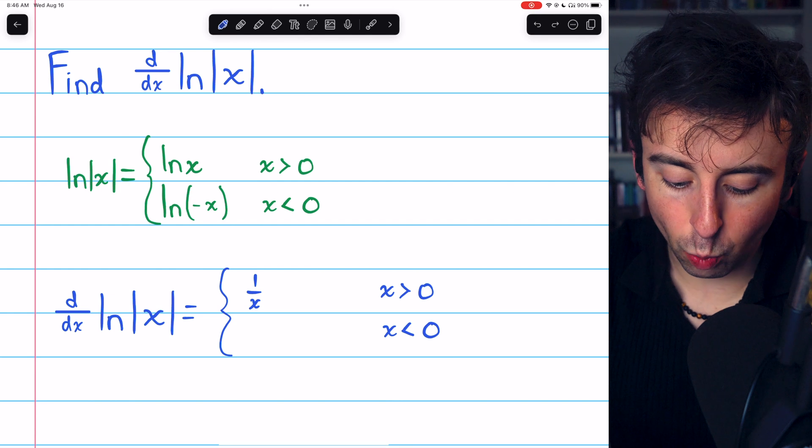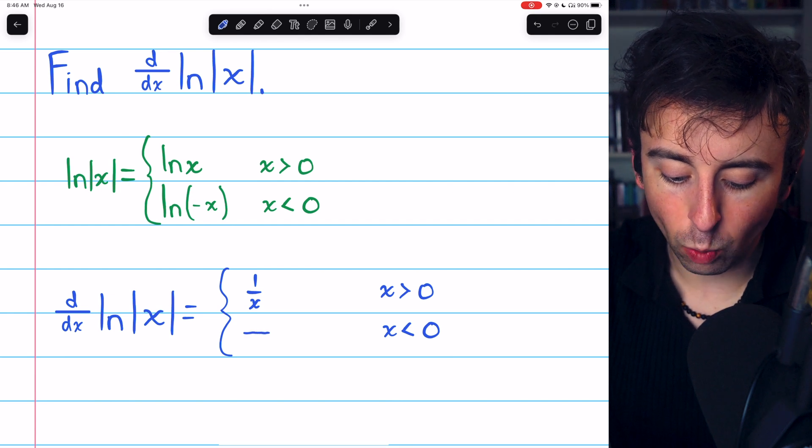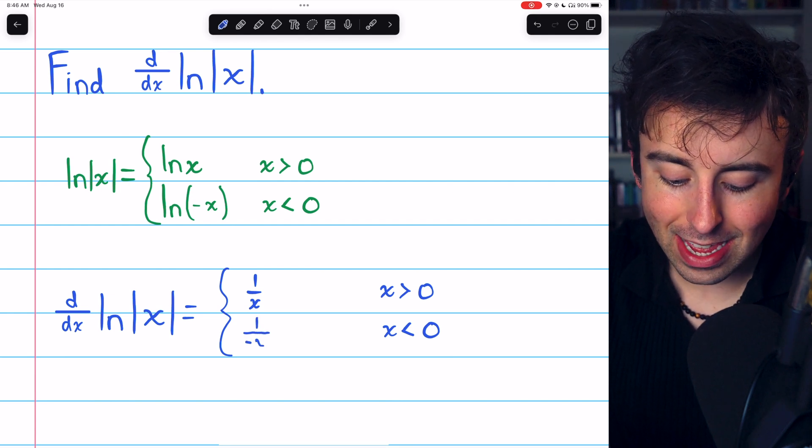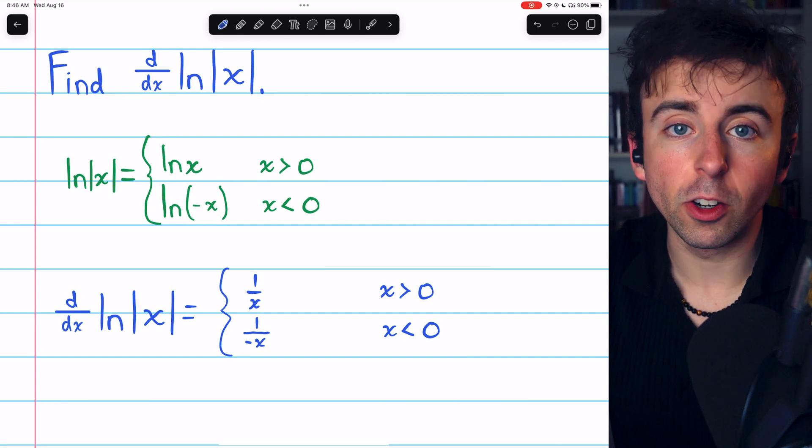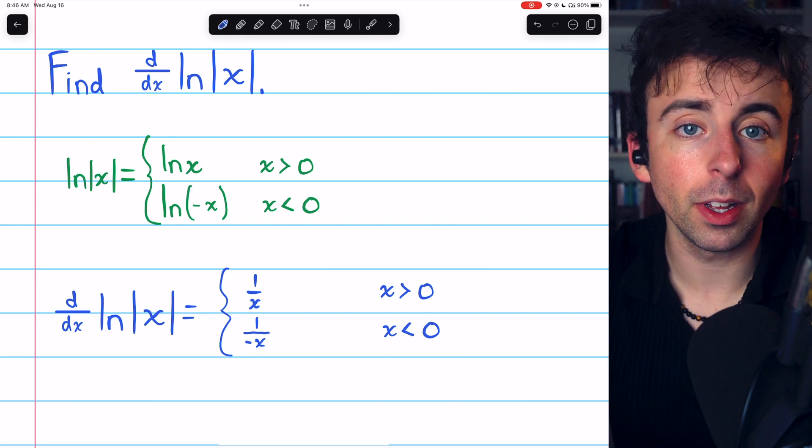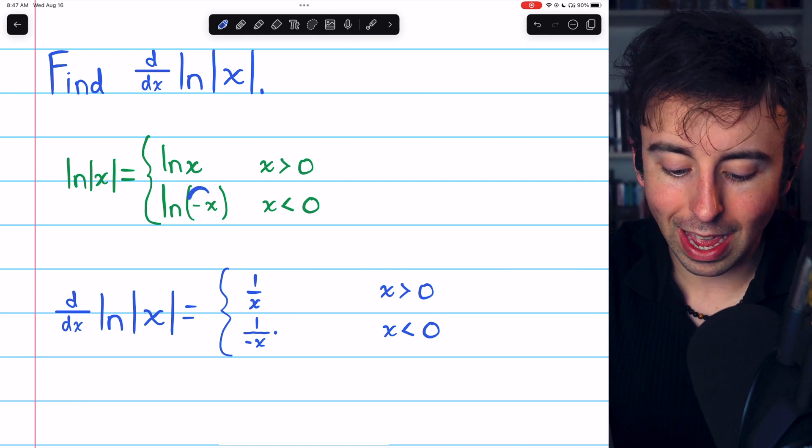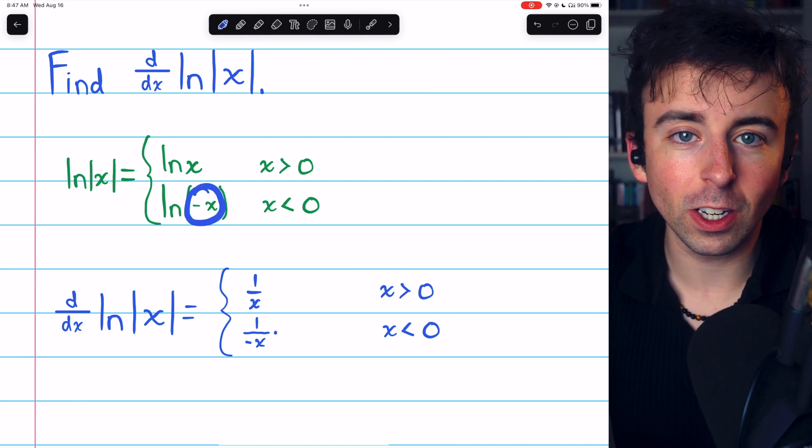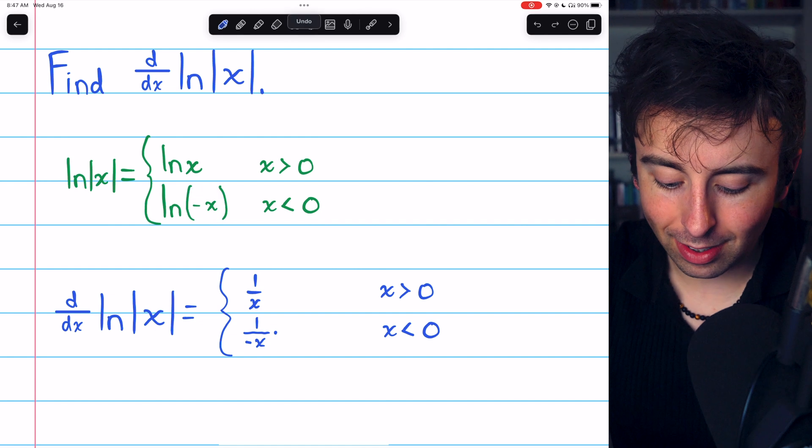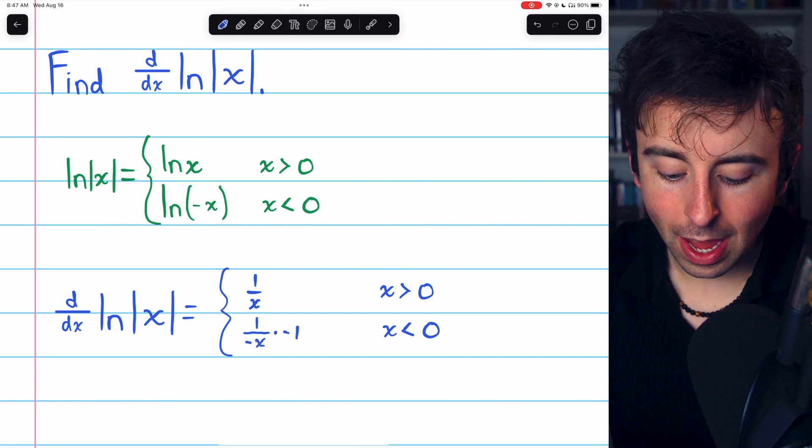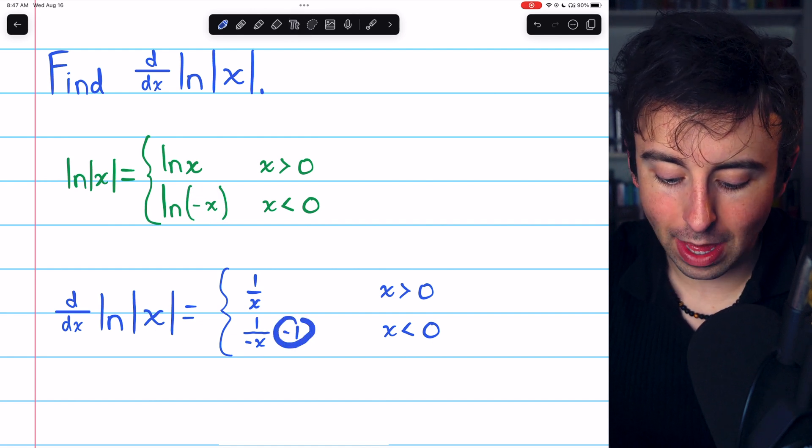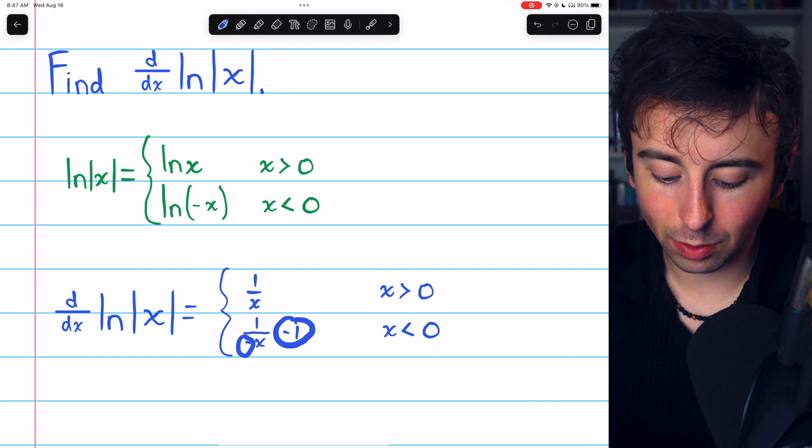We begin with the derivative of the natural log, 1 over the input. Leave the input unchanged. In this case, the input is negative x. Then we just need to multiply by the derivative of that input, that inside function. The derivative of negative x is just negative 1, and so the negative there will cancel out with the negative down there.